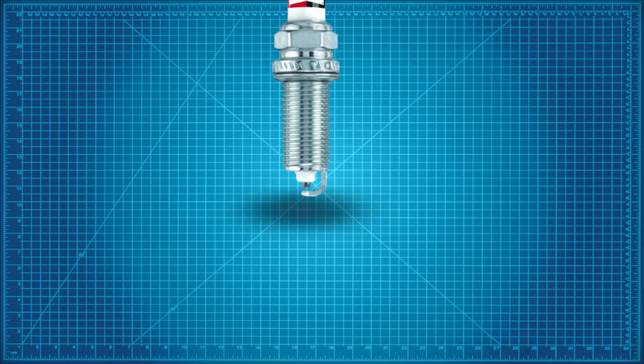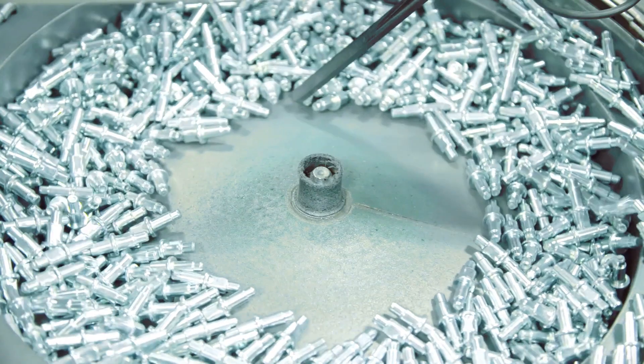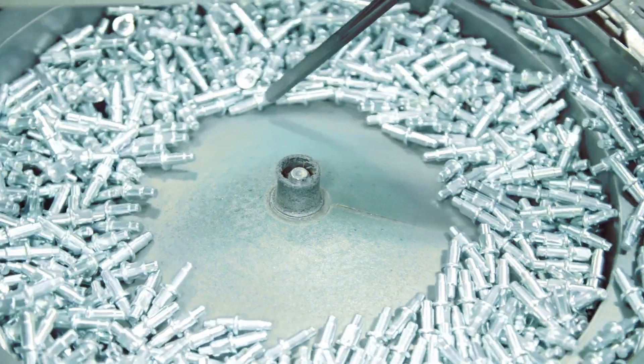This would be further enhanced by the inclusion of ribs, which expanded the surface area of the insulator, offering additional electrical insulation and resistance to dirt and moisture. Modern spark plugs still use sintered alumina and can tolerate voltages well past 100,000 volts.